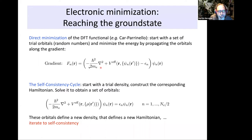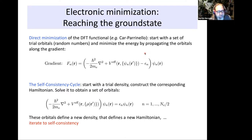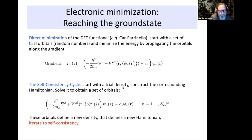The second approach is the self-consistency cycle. Here we start with a trial density — in most cases overlapping atomic charge densities from the PAW files — construct the corresponding Hamiltonian, solve it to obtain a set of orbitals, and then those orbitals define a new density that defines a new Hamiltonian. We iterate to self-consistency. The self-consistency cycle was at some point considered outdated, and direct minimization was the approach of the Car-Parrinello era.